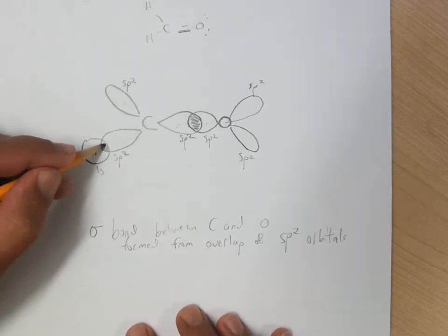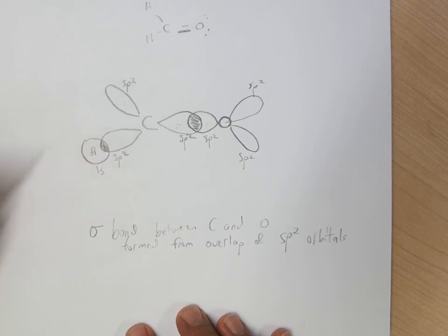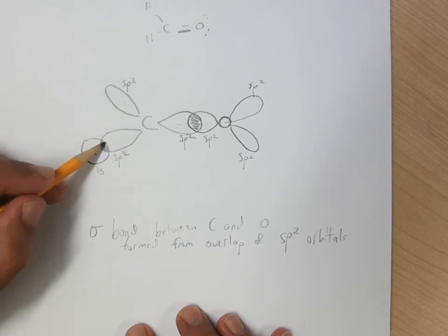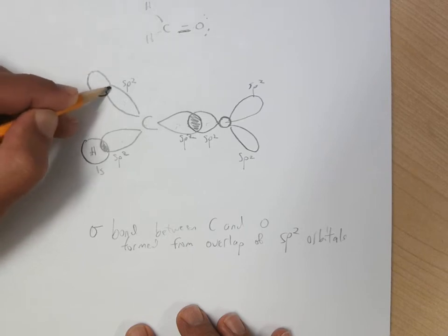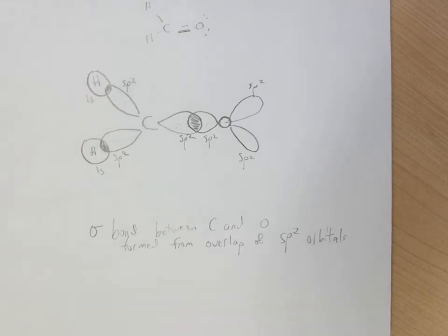So each hydrogen just has a 1s orbital. And notice we can line up the hydrogen 1s orbital with the SP2 orbital on the carbon, and you'll see again this nice sigma overlap, head-to-head interaction of two orbitals. The other hydrogen bonds to the carbon in the same way.